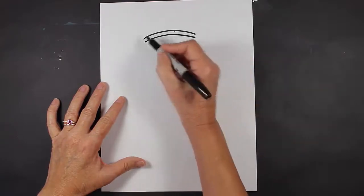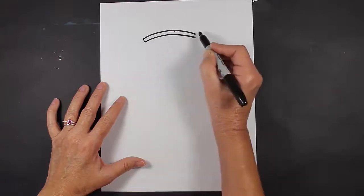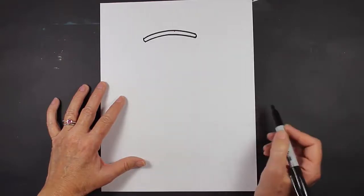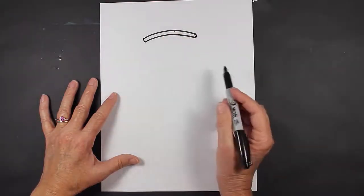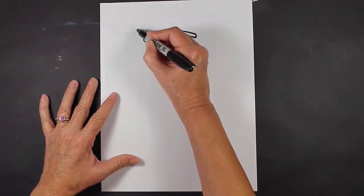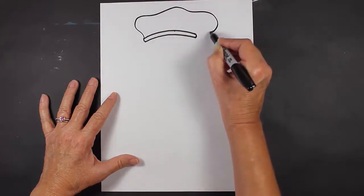Then we're going to close those two lines up with very small lines like that. On top of this first line that we drew, we're going to make a hat, so we're going to make a line that's kind of curvy like this.